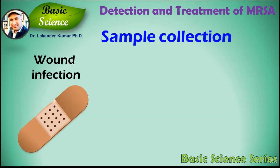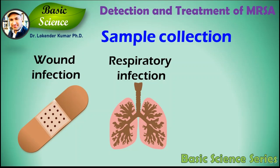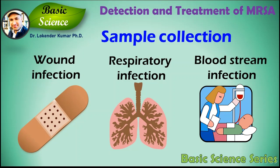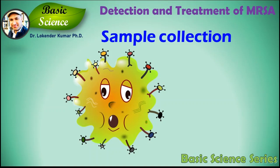Patients should immediately contact a certified physician for better diagnosis of the infection. The first stage will be sample collection, collected from the affected area. Since MRSA infection is mostly a skin infection, a swab of the affected area is the right sample. In case of respiratory infection, a nasal swab or sputum sample can be taken. In bloodstream infection, the sample will be blood. The sample should be acquired by a trained physician to avoid contamination.